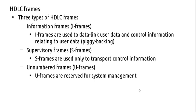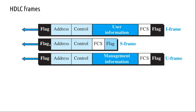We will have just an overview of these frame types without going into the control bits in detail. The control bits give each frame type its particular functionality — used to control data, user data link, and control information. S-frames are strictly for control information, and U-frames are for system management. All these frames have a similar general format.